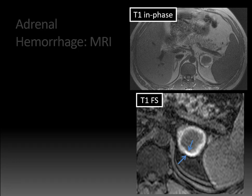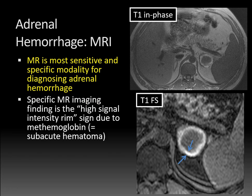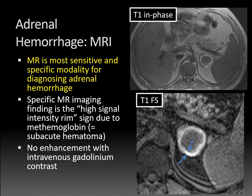This is a very classic appearance for adrenal hemorrhage on MRI. MRI is actually the most sensitive and specific modality for diagnosing adrenal hemorrhage. This specific MRI imaging finding is the high signal intensity rim sign, which is due to the presence of methemoglobin — a form of hemoglobin we tend to see in the setting of a subacute hematoma. And if we gave contrast, just like on CT scan, there would be no enhancement.